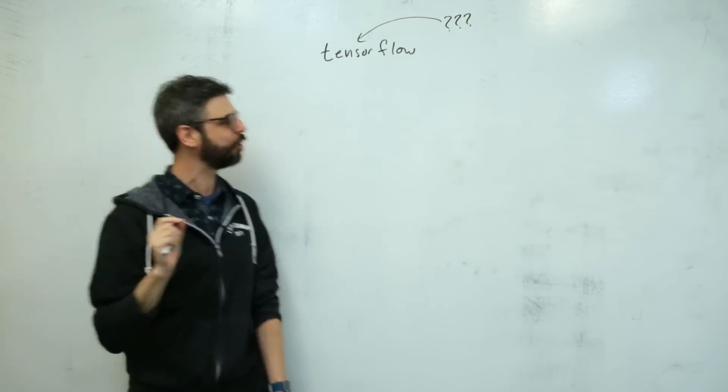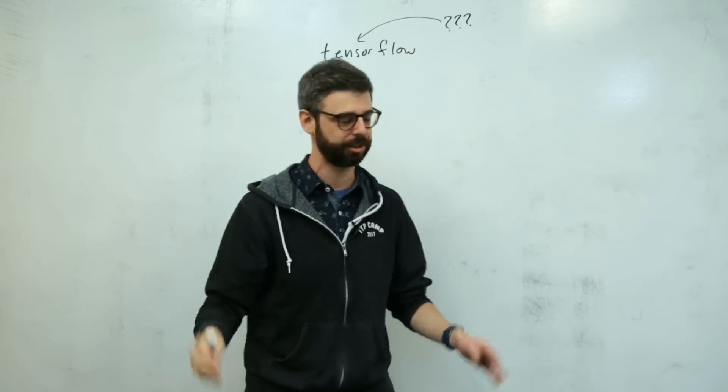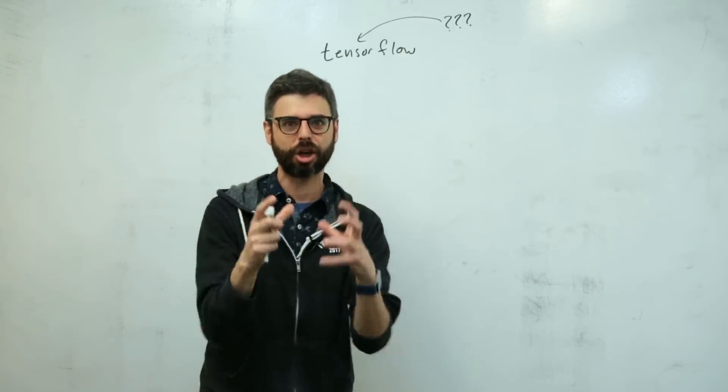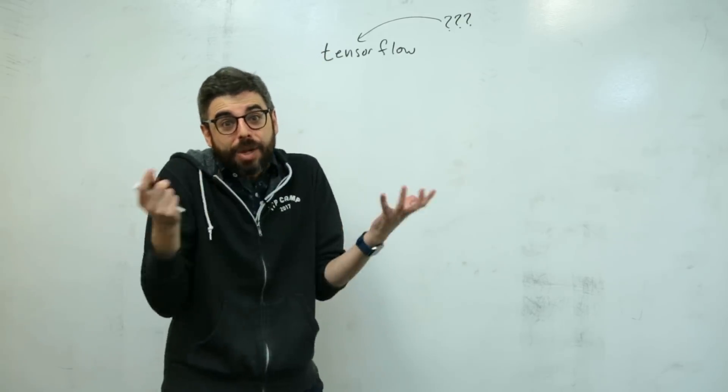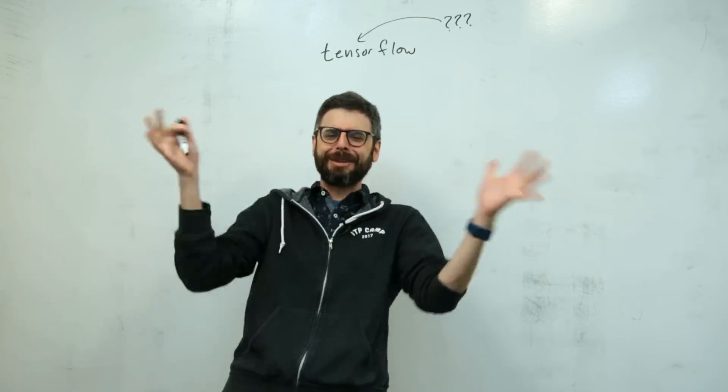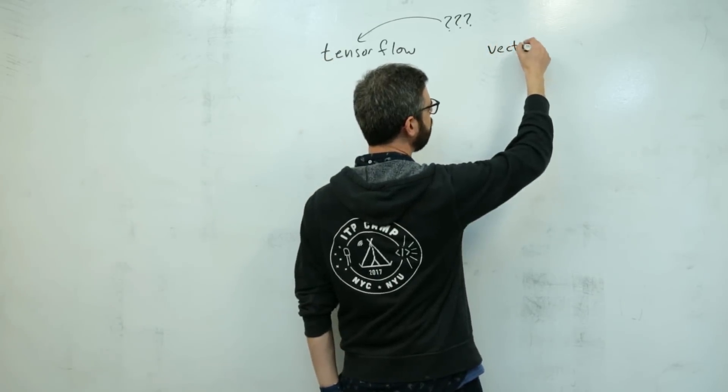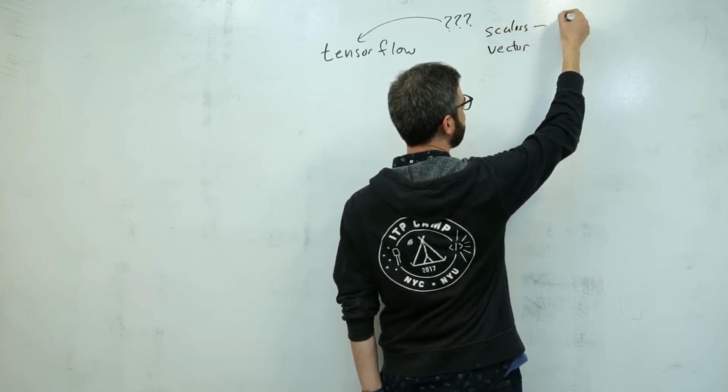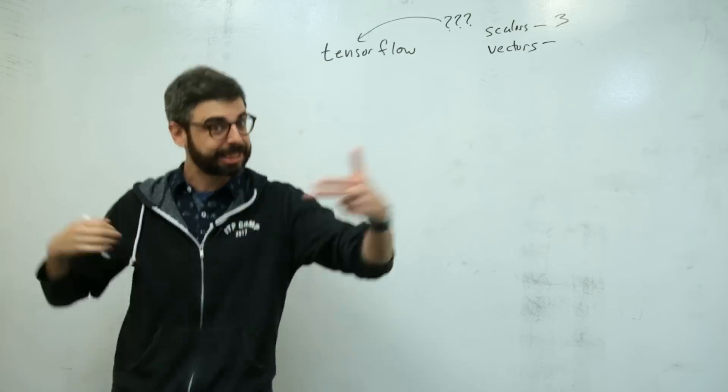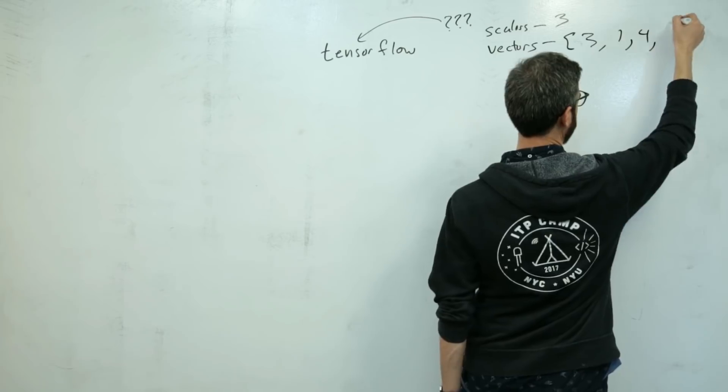First of all, you might even be asking yourself, why is it even called TensorFlow? What is this thing called a tensor? This is going to be really important because when I start to look at the code for TensorFlow.js, there's going to be stuff in there called tensors. A tensor is a mathematical thing, a structure that holds numbers in it.